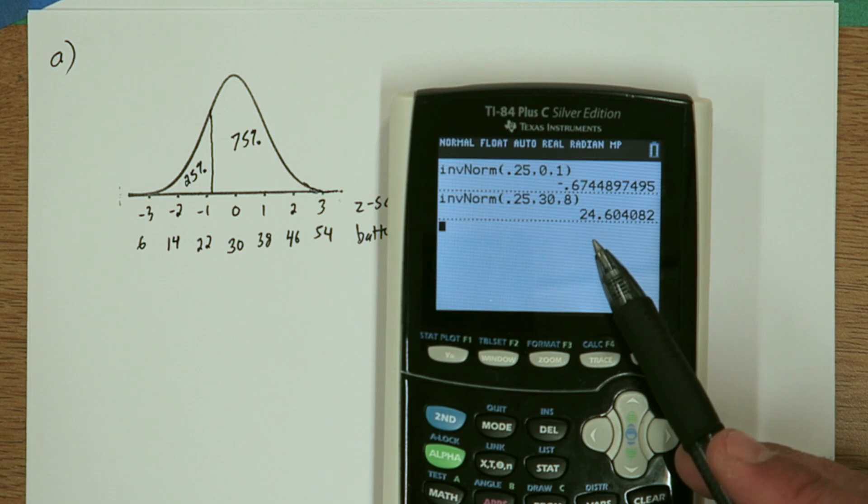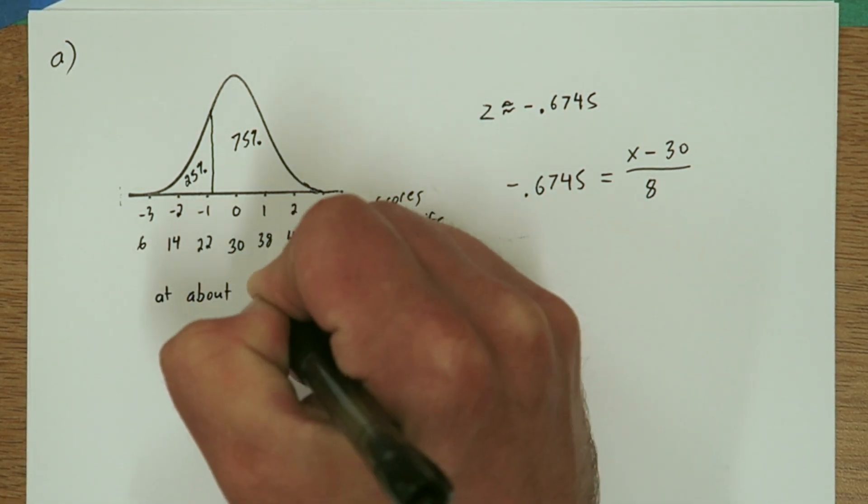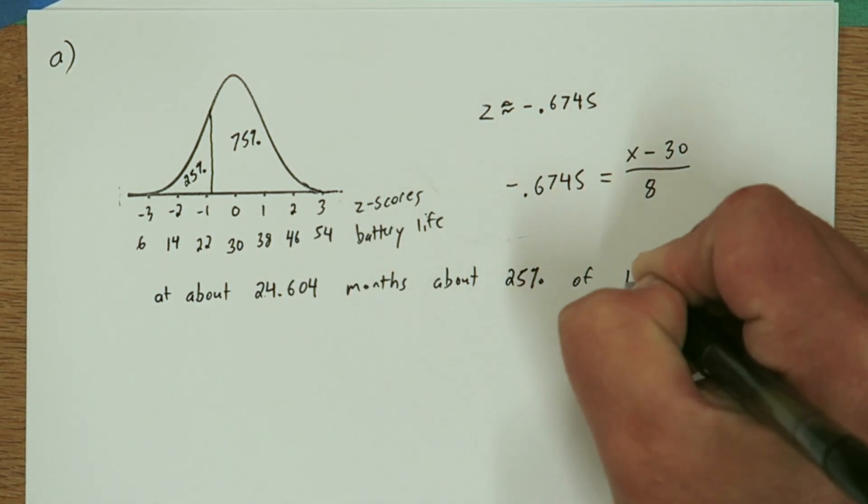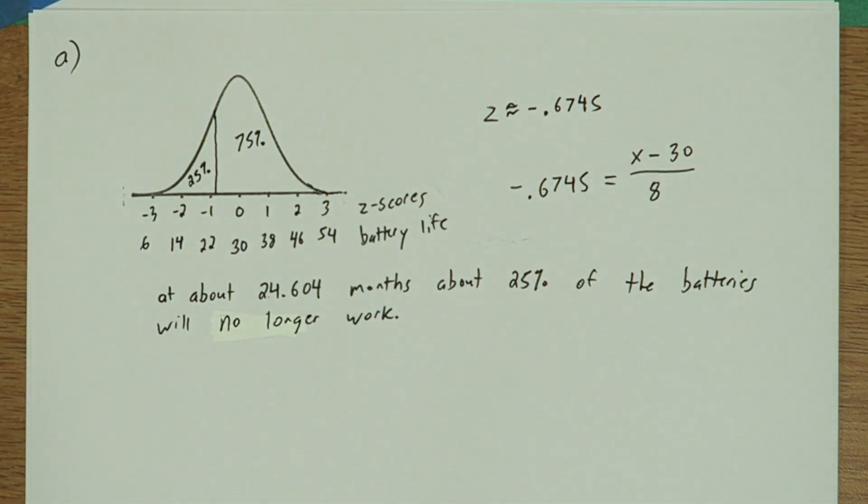It turns out 24 months and 0.6 of a month. So we'll say at about 24.604 months, about 25% of the batteries will no longer work.